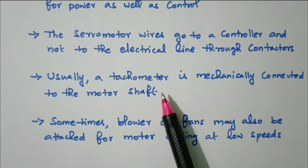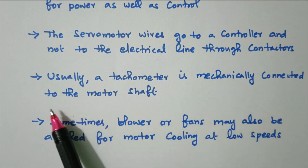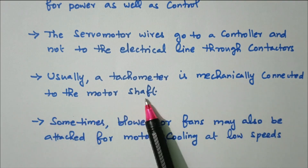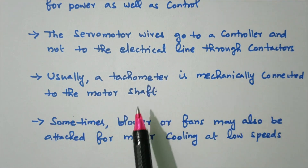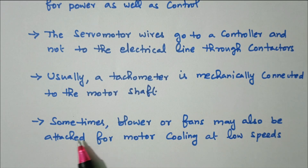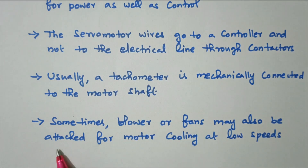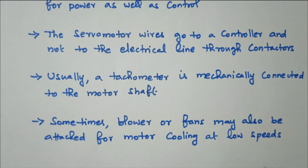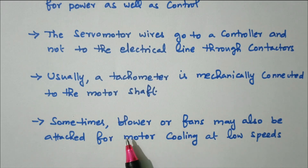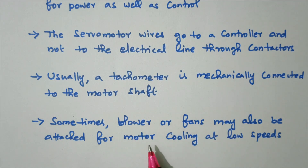Usually a tachometer is mechanically connected to the motor shaft. Sometimes a blower or fan may also be attached for motor cooling at lower speeds — for cooling purposes, a blower or fan is connected to cool the motor at lower speeds.